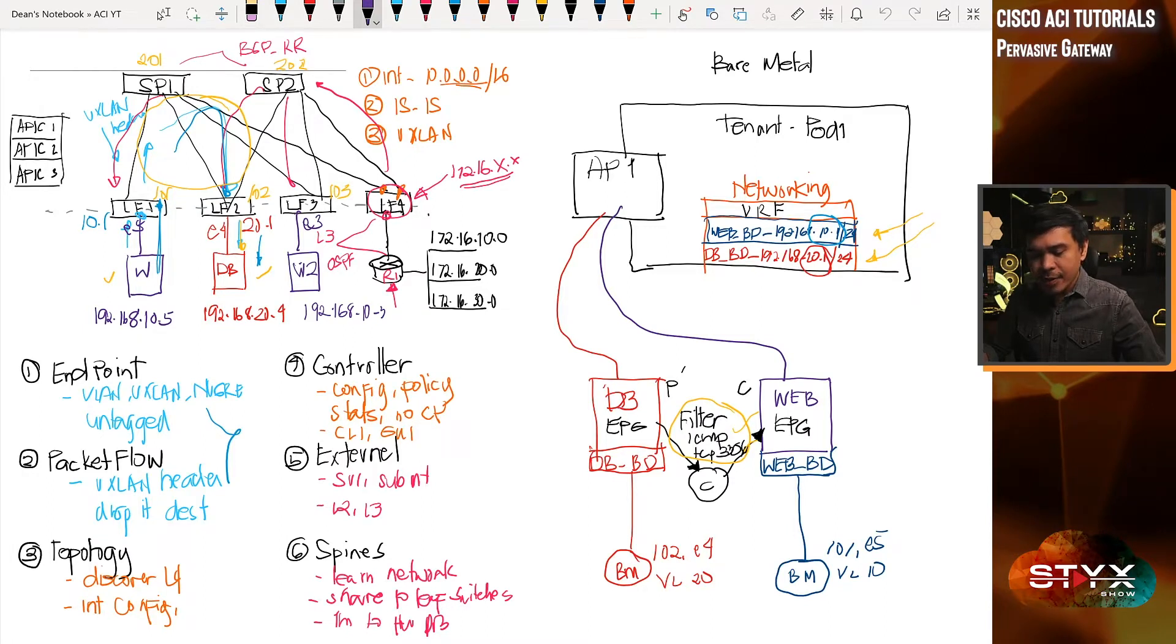What we're gonna do is this web server2 will also be added as part of WebEPG. So what will happen here is we're gonna bind the switch and the interface where the web server2 is connected. So this will be 103, the switch ID. And we also have E3, the interface Ethernet3 connected directly to our web server. And let's say we also use VLAN10.